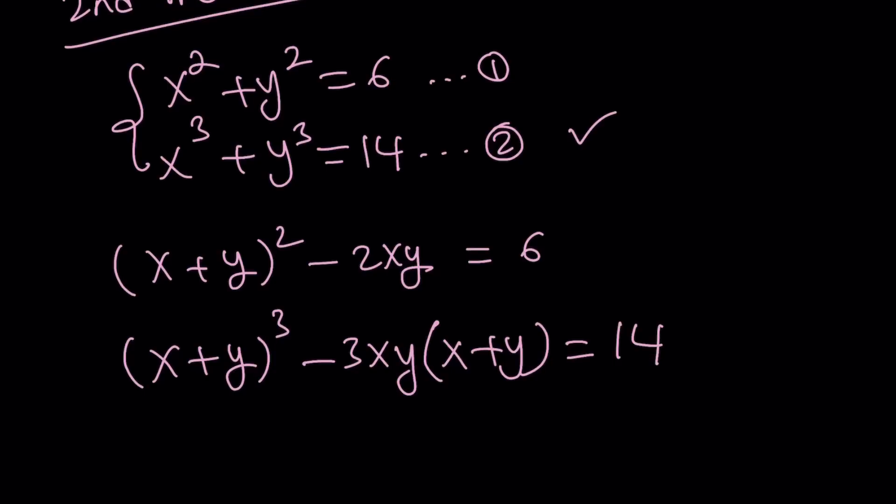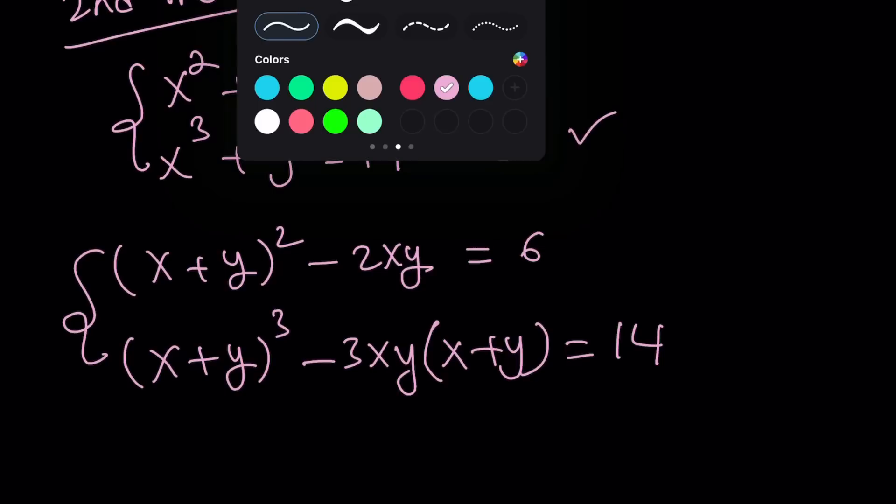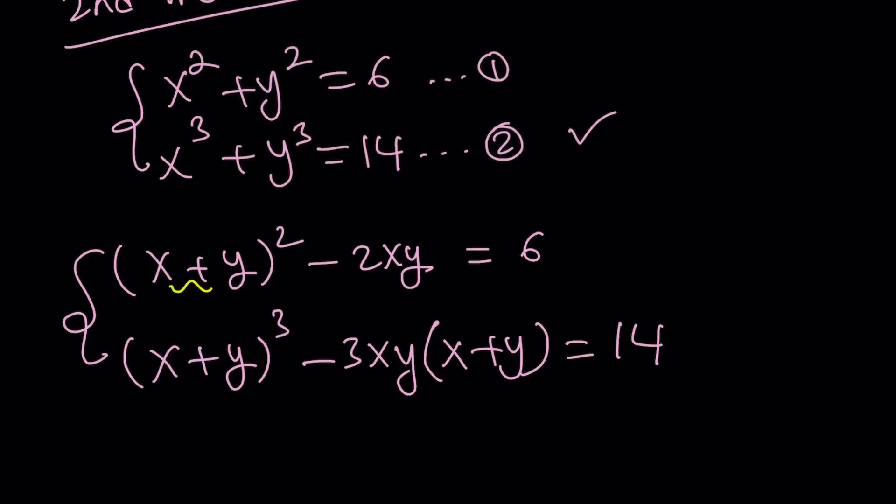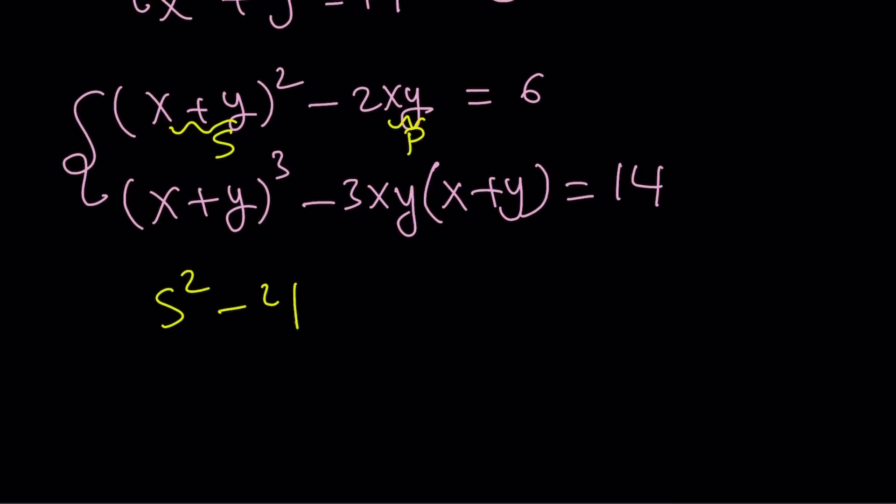But this time, it's equal to 14. So we have ourselves a nice system. Why do I call it a nice system? Because if you make a substitution, obviously substitution is always awesome. Set x plus y equal to s for sum. And set this equal to p for product. So we get the following, s squared plus 2p equals 6. And s cubed minus 3ps equals 14.